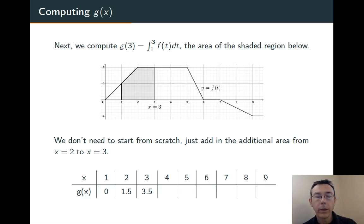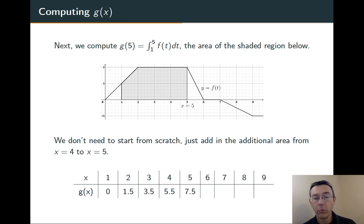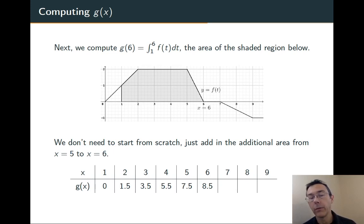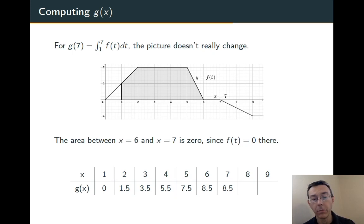Similarly, when we compute g(4), we need 2 more units of area, giving us 5.5. g(5) will be 2 more than that. And g(6) will be 1 more than that, because we've added in a new triangle with height 2 and base 1. Now, when we go from 6 to 7, we're not contributing any new area. g(7) and g(6) should be the same.